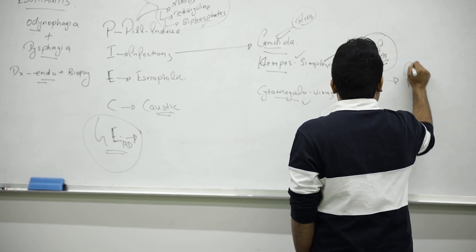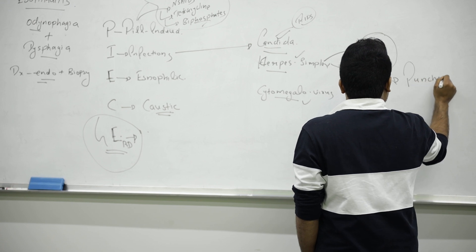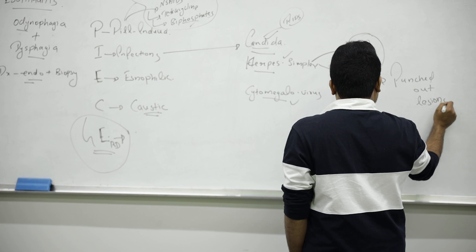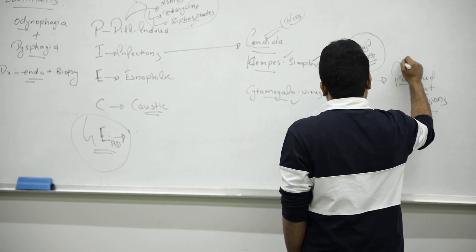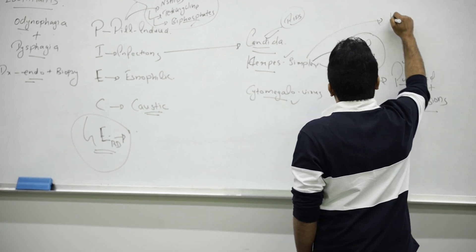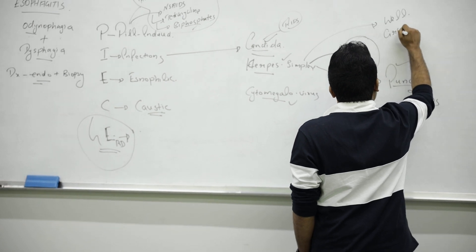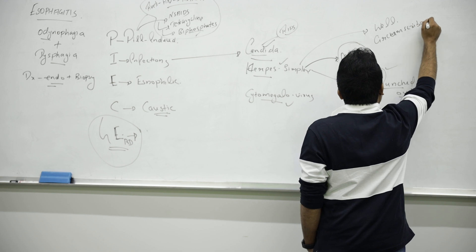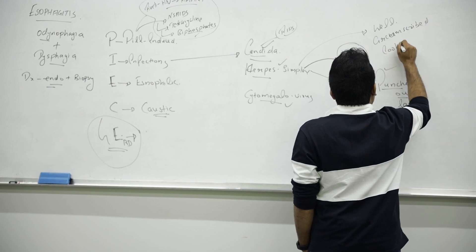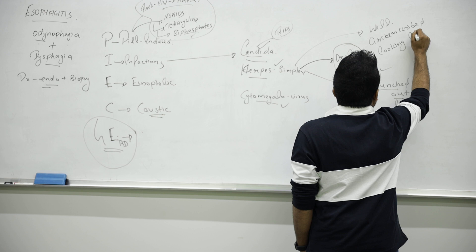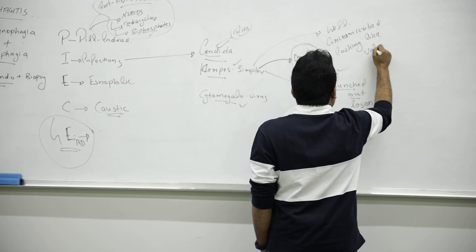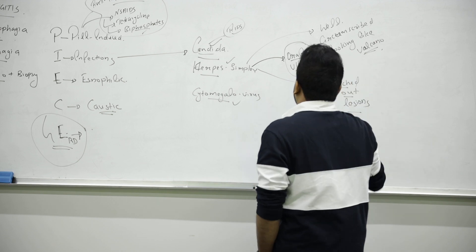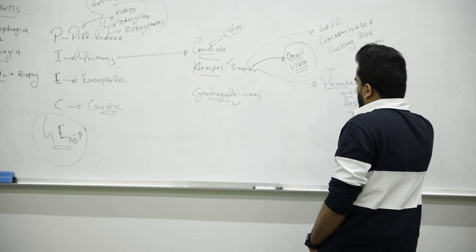Herpes simplex - what you have to know is they will cause oral ulcers. What type of ulcer? They look like a punctured out lesion - buzzword in the exam. Or they will give you in the exam that it looks like well circumscribed.